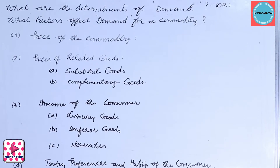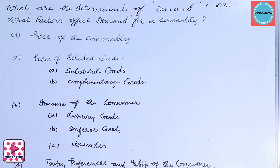Broadly there are four factors: one, price of the commodity itself; two, prices of related goods, where we discuss substitute goods and complementary goods; three, changes in income of the consumer, covering luxury goods, inferior goods, and necessities; and four, taste, preferences, and habits of consumers.